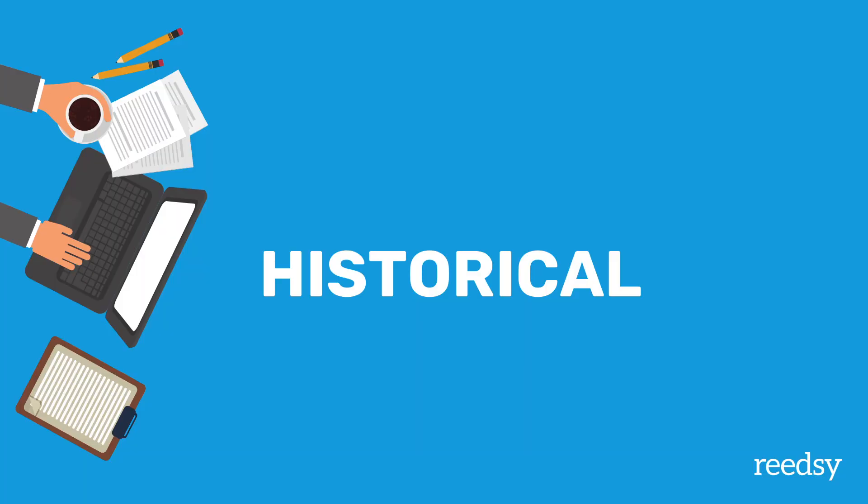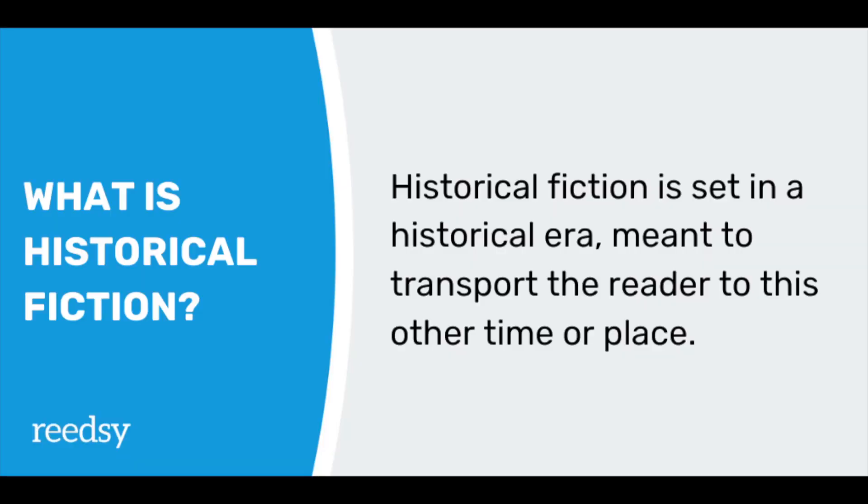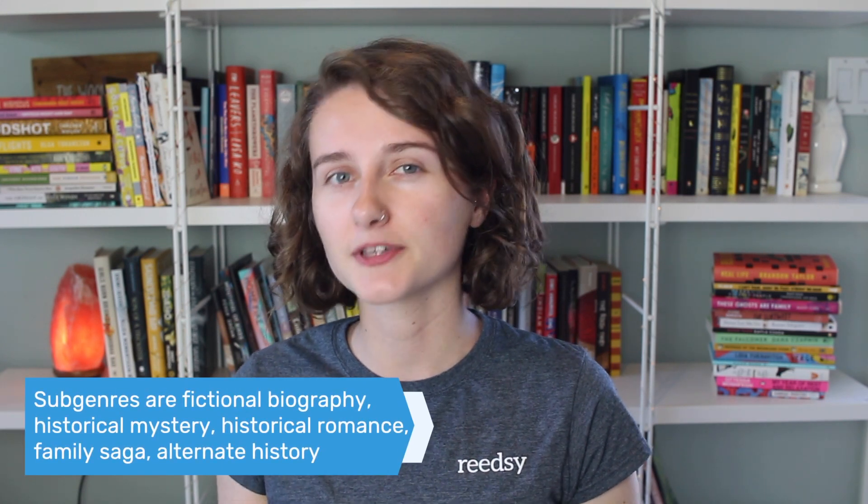Now let's talk about historical fiction. Historical fiction is set in the past and is meant to transport the reader to another time or place. These books are usually very richly detailed and carefully researched, and can involve reference to real people or real historical events, or even integrate those things into the plotline. Usually the historical setting is more than just a backdrop — it's a very core element of the story and the reading experience. Historical fiction doesn't really have as many subgenres; typically the subgenre is just the time period it's set in, such as Victorian. Other subgenres include fictional biography, historical mystery, historical romance, family saga, and alternate history — although family sagas don't have to be historical.